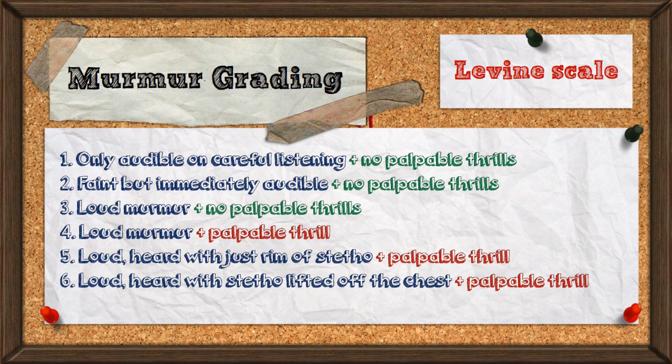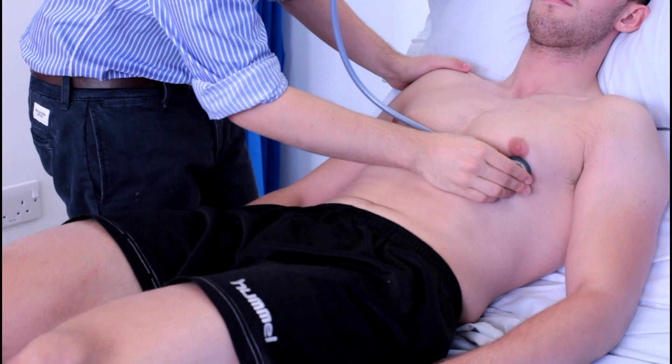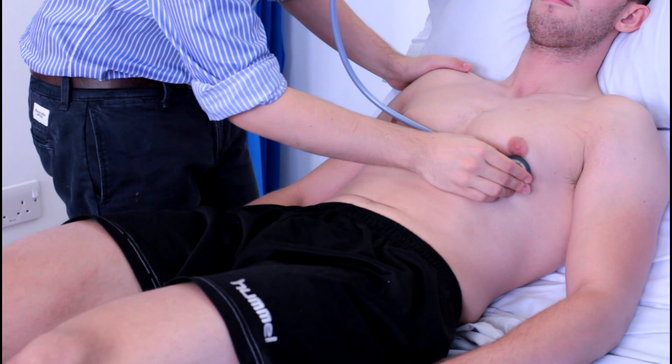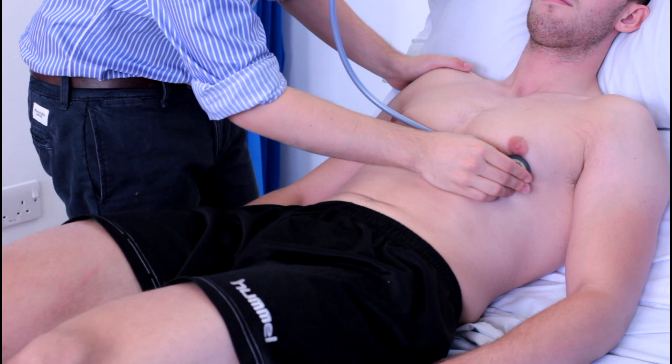Murmurs are graded on a scale of one to six. In general, the presence of a palpable thrill indicates a higher grading, while murmurs that are trickier to hear don't score quite so many points.